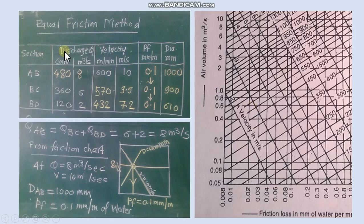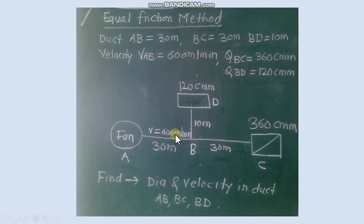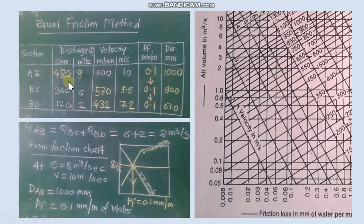So we use here tabulated form, first column section AB, BC, BD. Discharge in first duct will be summation of discharge at C and D end that is 480 cm. We need in m³ per second. Then respect to discharge in BC and BD in m³ per second we calculate.